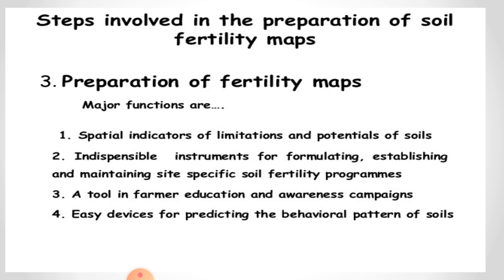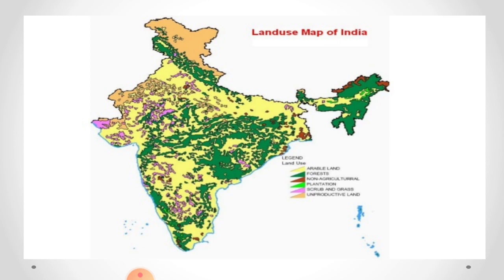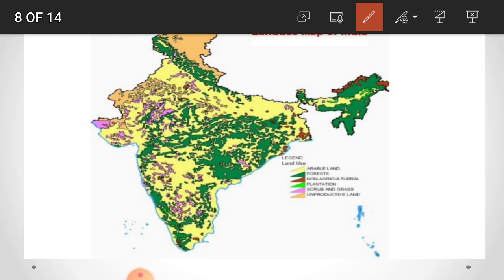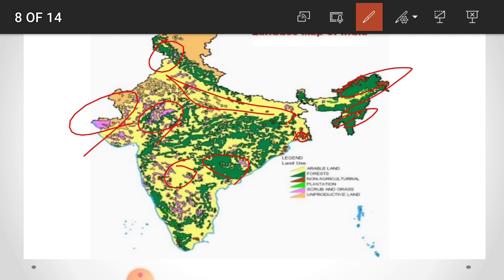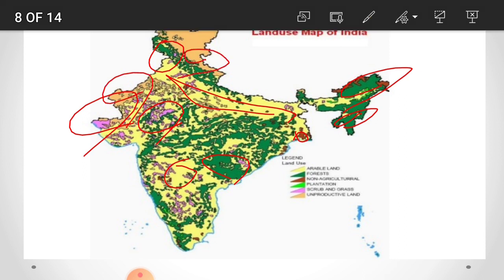This is the land use map of India. The green portion indicates forest area, yellow portion indicates arable or cultivable land, brown indicates non-agricultural area, light green color indicates plantation crops, pink color indicates grasses, and orange color indicates unproductive or uncultivable land.